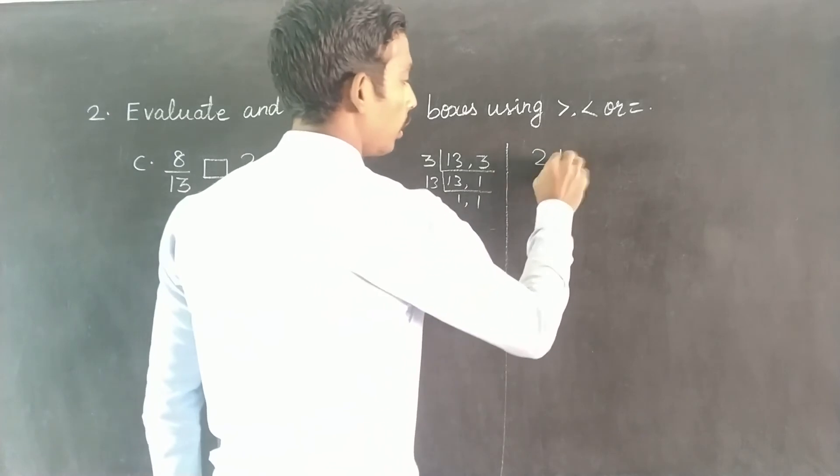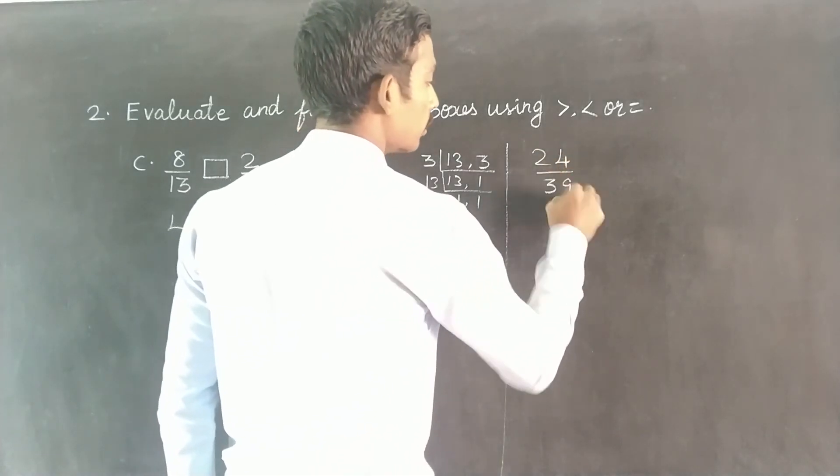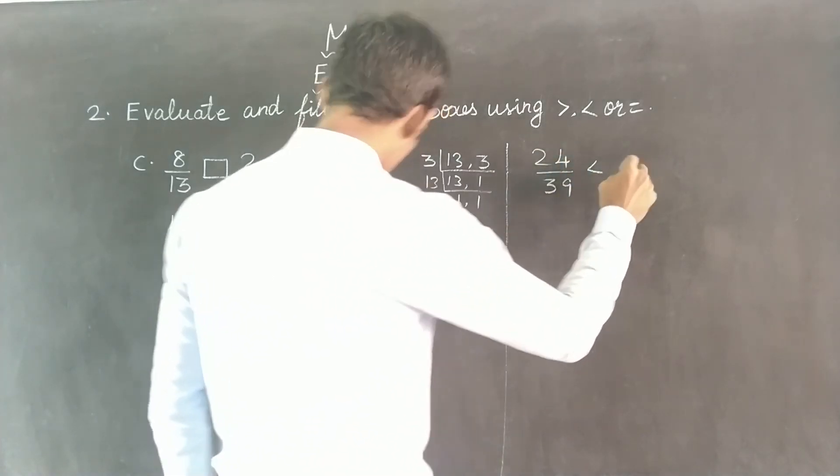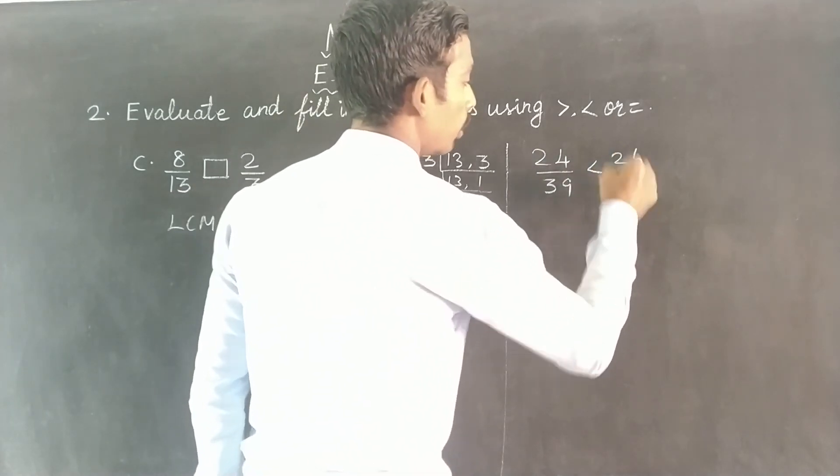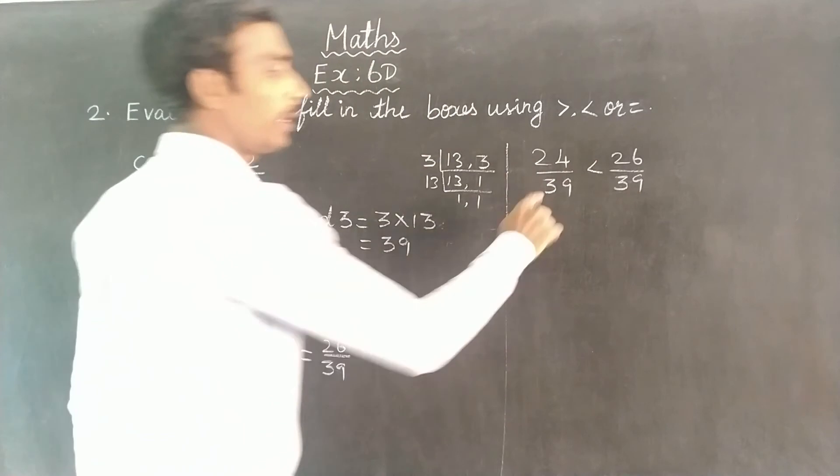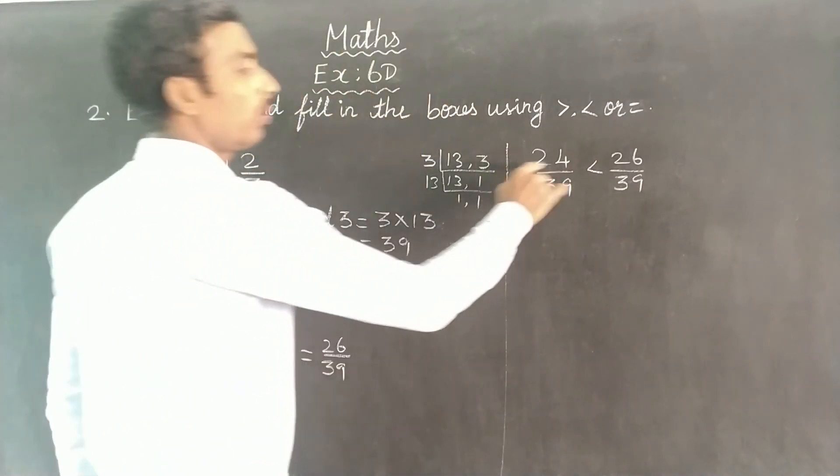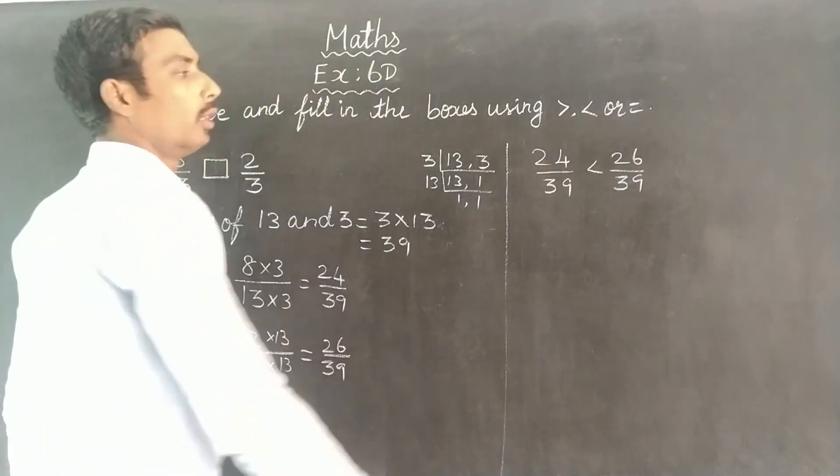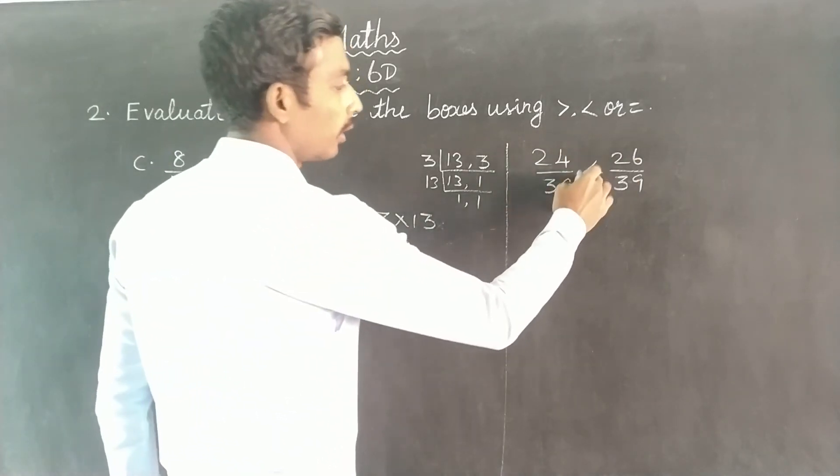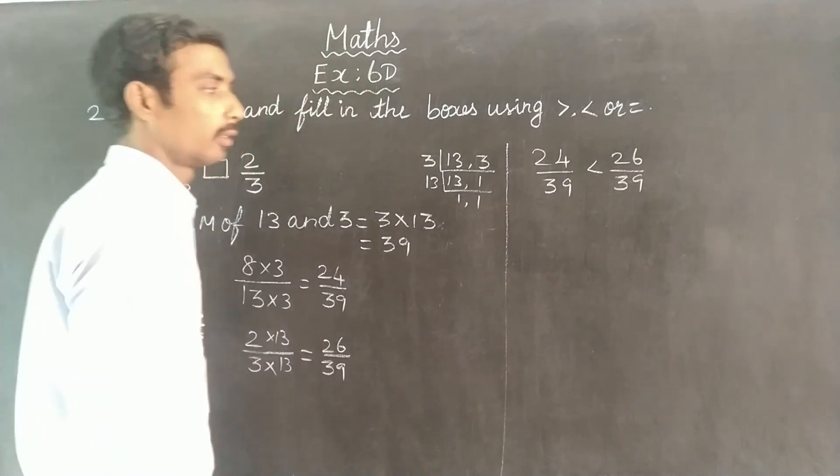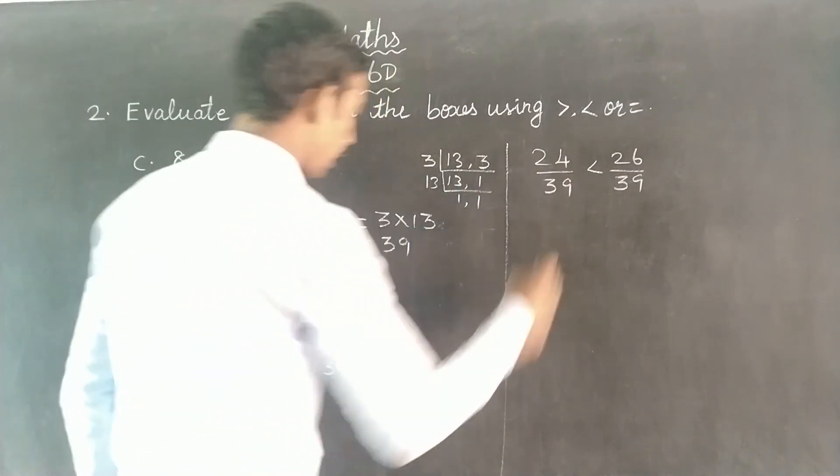So the answer is 24/39 less than 26/39. Because 26 is the bigger number, the denominators are the same at 39, and 24 and 26 - 26 is the bigger number. So 24/39 is less than 26/39.